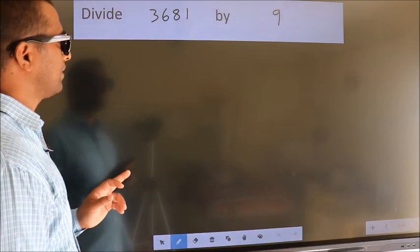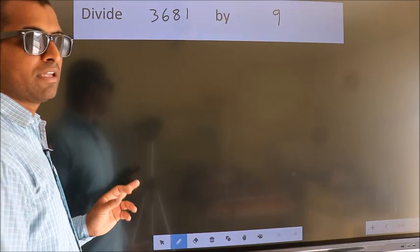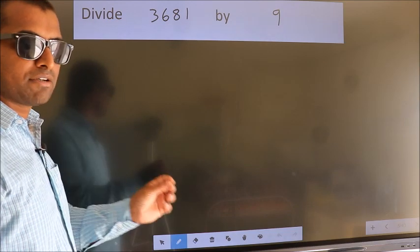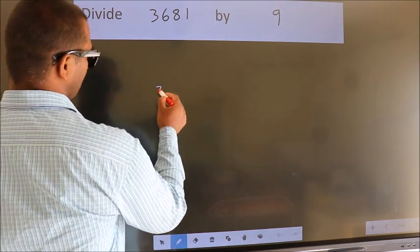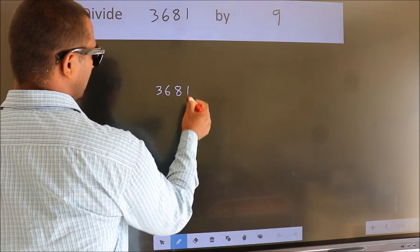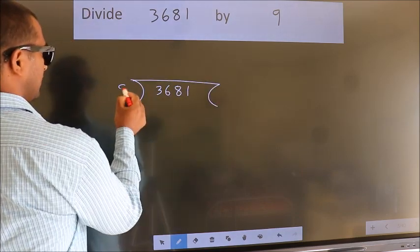Divide 3681 by 9. To do this division, we should frame it in this way. 3681 here, 9 here.